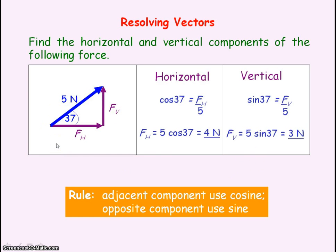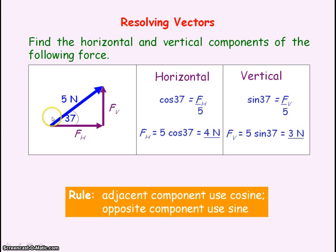You may remember we added a 4N force to the right with a 3N force vertically upwards to get a resultant of 5N at 37 degrees from the horizontal. By resolving, we've done the reverse — from that resultant force, we've broken it down into its horizontal and vertical components of 4N and 3N.